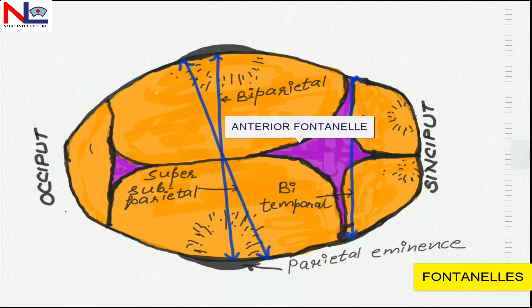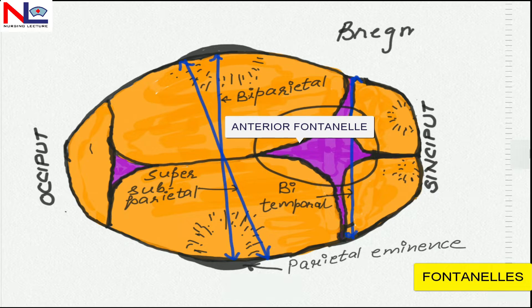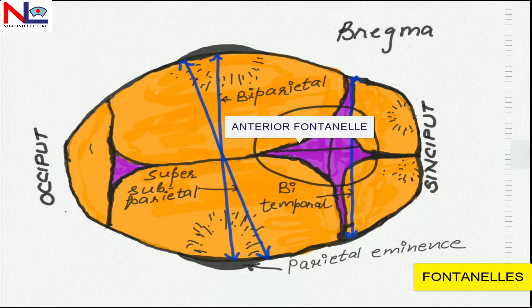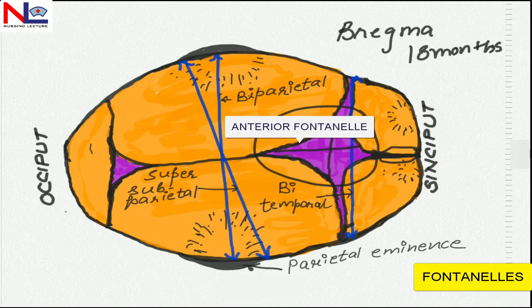Anterior to that is the anterior fontanel, termed as bregma. It looks like a diamond-shaped structure measuring about 3 to 4 centimeters in length and 1.5 to 2 centimeters wide, and it becomes closed at the age of 18 months. It is bounded anteriorly by the frontal suture, laterally by the coronal sutures, and posteriorly by the sagittal sutures.